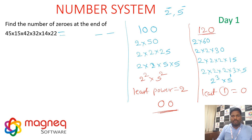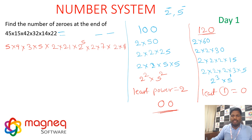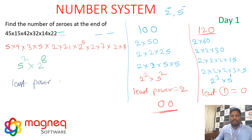Applying to the given product: convert all numbers into powers of 2 and 5. Combining: we get 5² and 2⁸. The least power is 5² (power of 2), so the given number ends with 2 zeros.